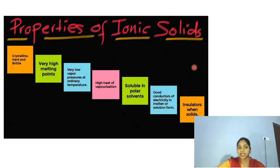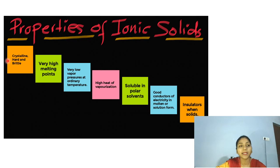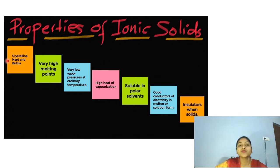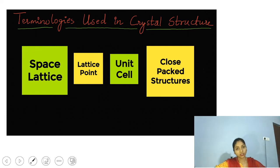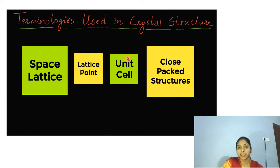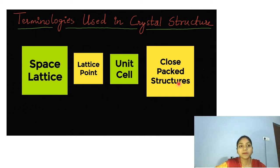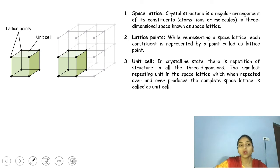Ionic solids are crystalline and are available in the form of a crystal structure. We need to study certain terminologies related to crystal structures, which we have studied before but will revise again. There are four terminologies: the space lattice, the lattice point, the unit cell, and the close-packed structure. Space lattice is nothing but the regular arrangement of its constituents — atoms, ions, or molecules — in three-dimensional space.